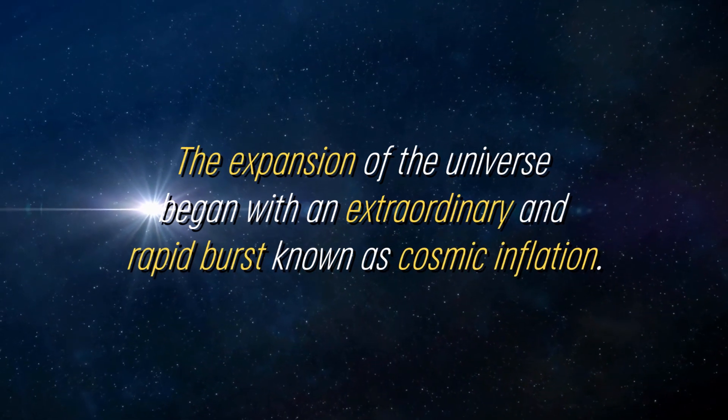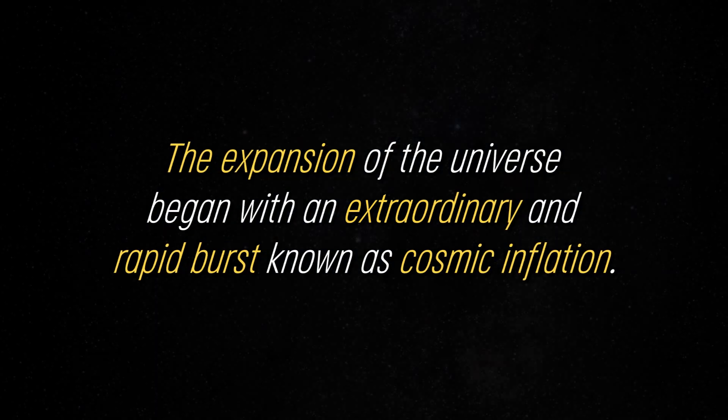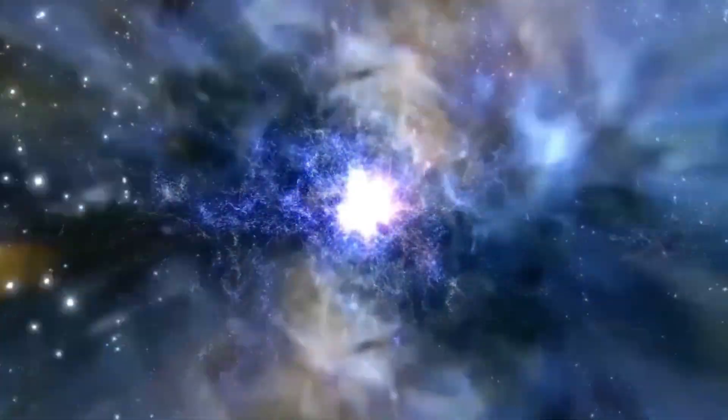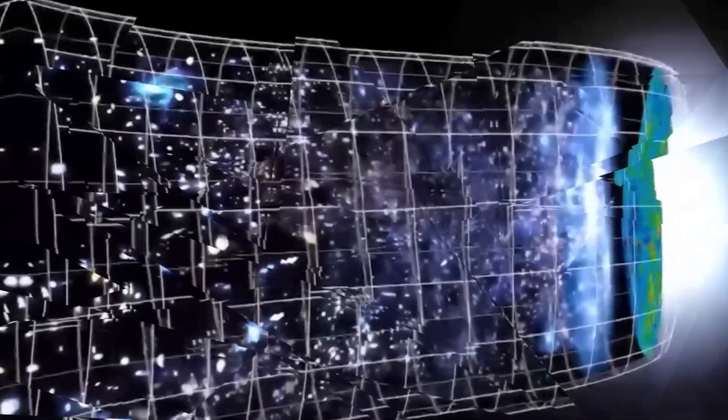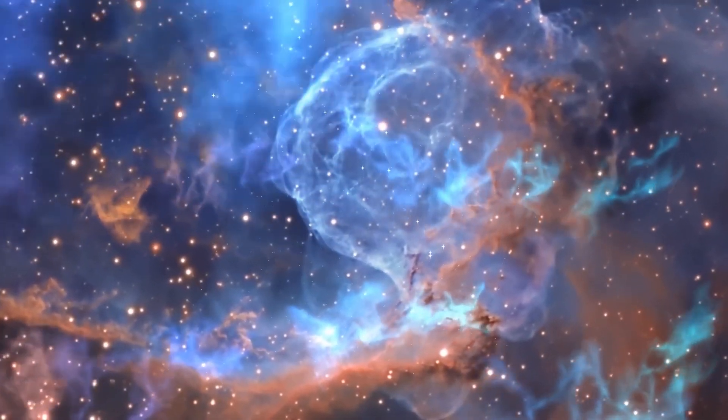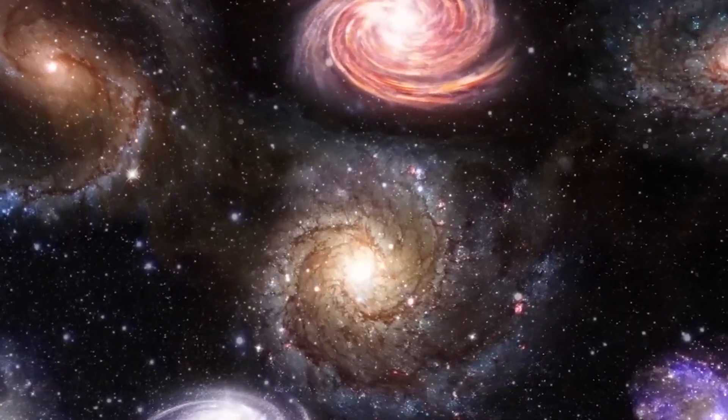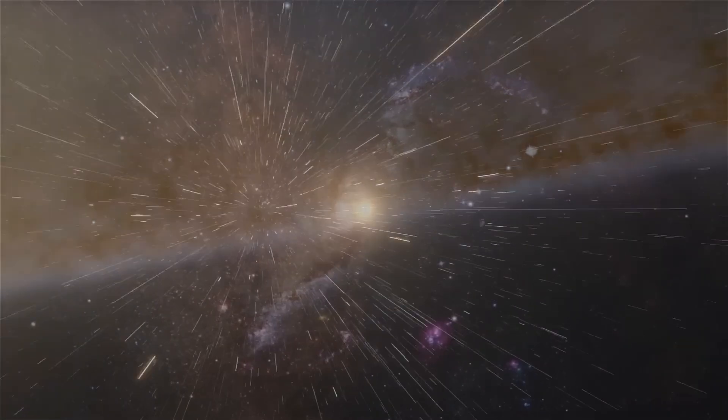The expansion of the universe began with an extraordinary and rapid burst known as cosmic inflation. During this phase, the universe expanded at an unimaginable speed, far exceeding the speed of light. It is as if the very fabric of space stretched and stretched, pulling everything within it with it. Cosmic inflation played a massive role in the formation of the large-scale structure of the universe. It smoothed out irregularities, homogenized the distribution of matter and energy, and paved the way for the subsequent formation of galaxies, stars, and other cosmic structures.